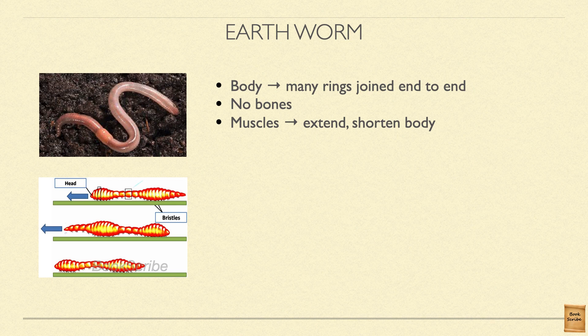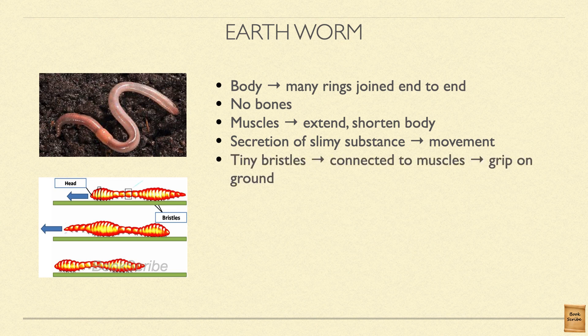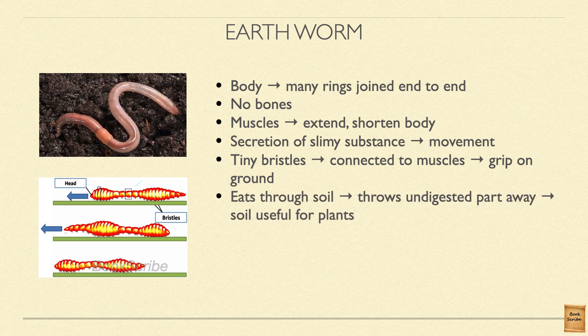Using its muscles, the earthworm has two types of movements: expansion and contraction. While moving, it secretes a slimy, watery, gum-like substance from its body that helps it move. When extending its front part, it fixes to the ground using tiny hairs under its body called bristles, which are attached to the muscles and give a good grip on the ground. Inside the soil, where there is hardly any space, the earthworm eats the soil, moves a little forward, digests and throws the undigested soil out — then eats again, moves forward, and throws undigested soil out. This is how the earthworm moves inside the soil.